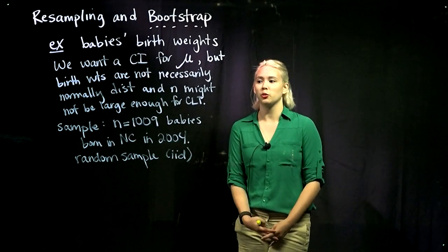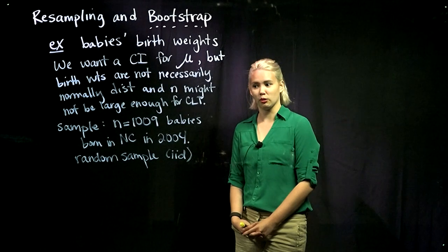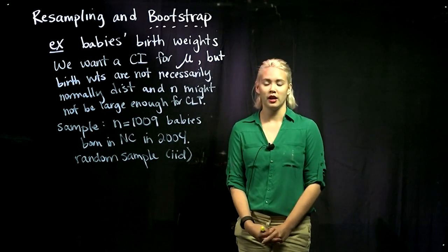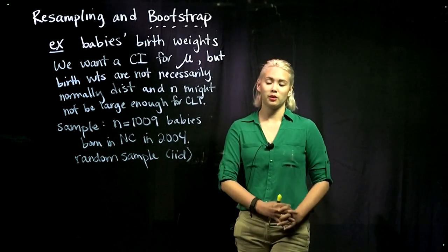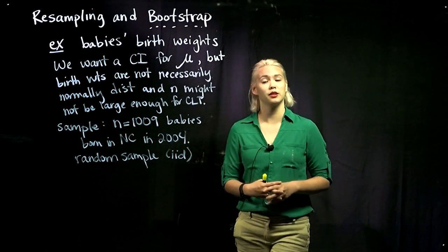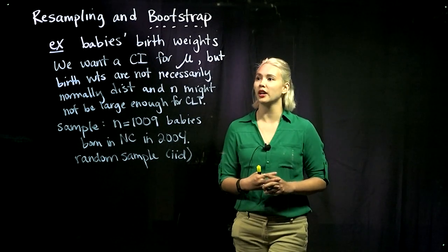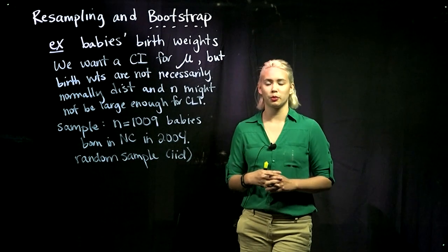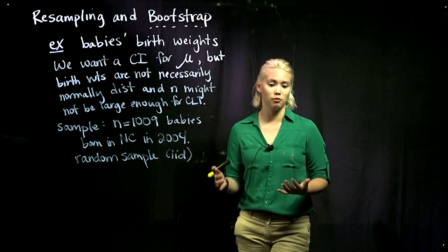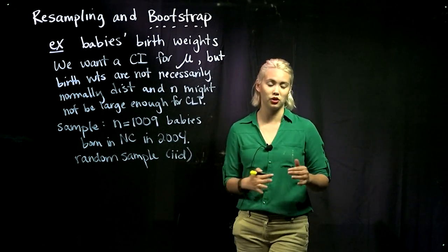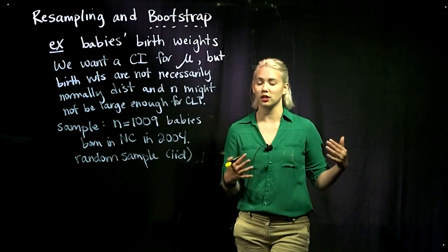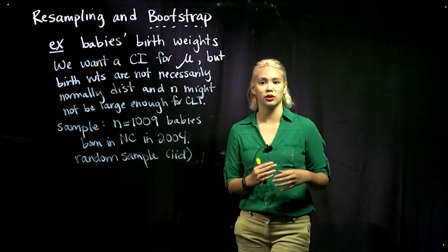In this example, we have 1,009 babies that were born in North Carolina in 2004. This is a random sample, so it should be representative of the population. We're interested in the babies' birth weights, because birth weights can be linked to health conditions later in life, such as diabetes and obesity.